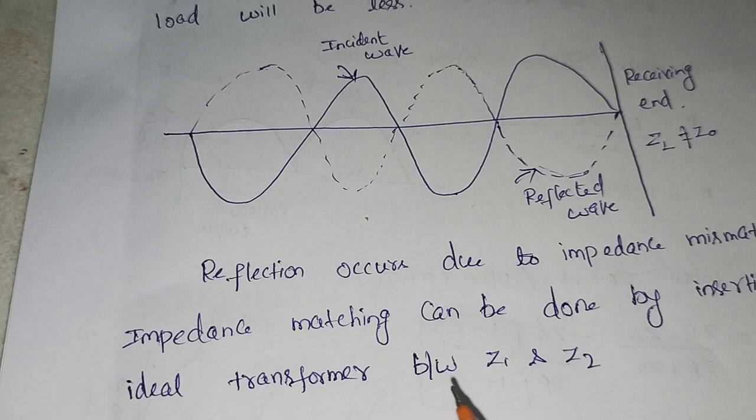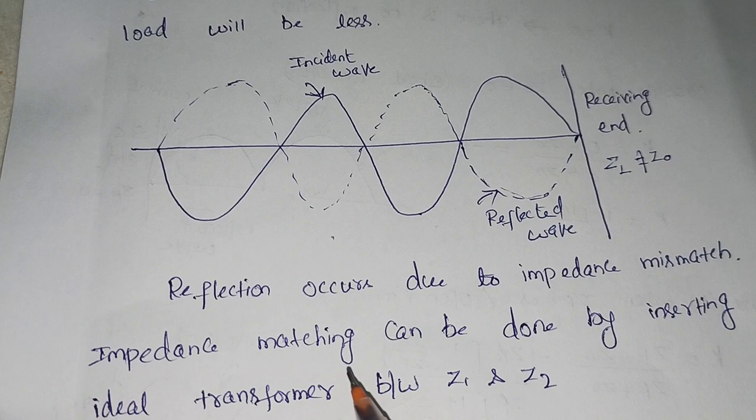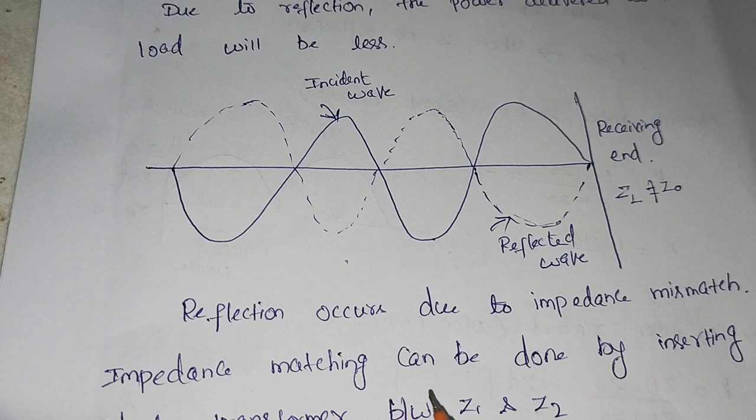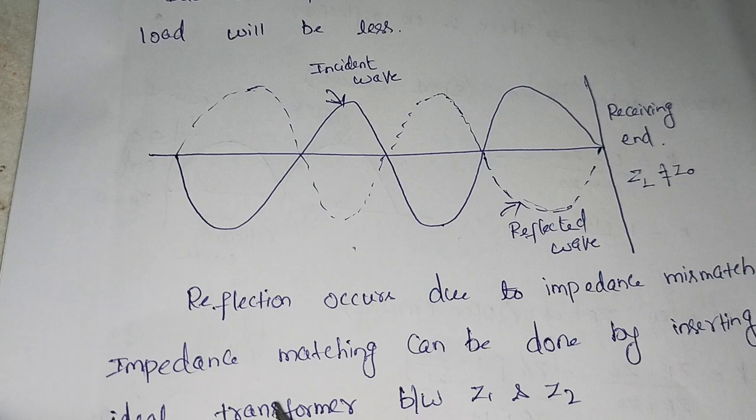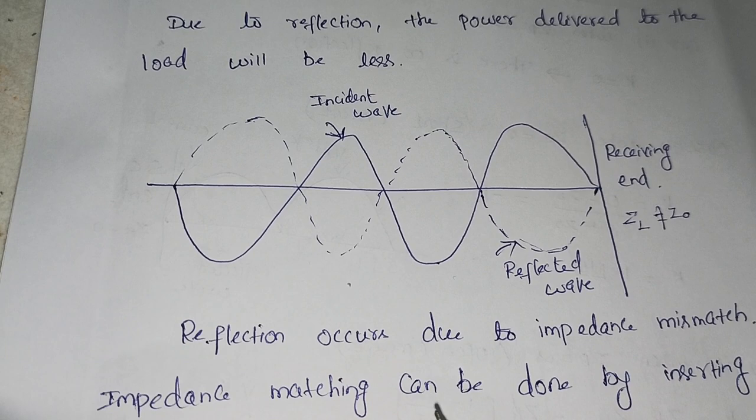This reflection is happening due to impedance mismatch — whenever the load impedance is not equal to the characteristic impedance. If we want to reduce this reflection and deliver maximum power from the source to the load, these impedances have to be matched. For performing this impedance matching, we have to insert an ideal transformer between the load and the source impedances.